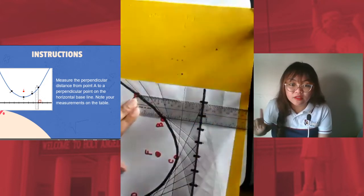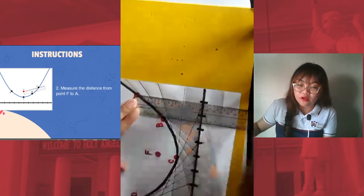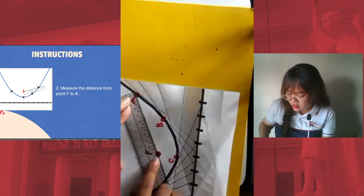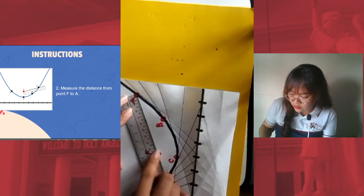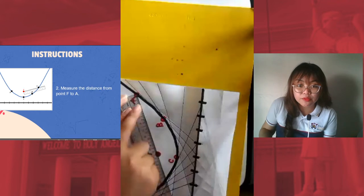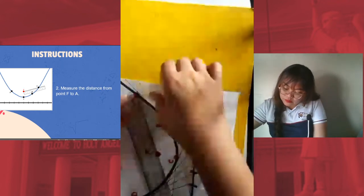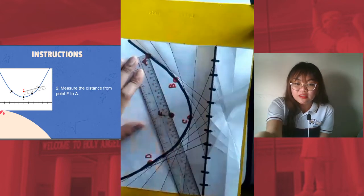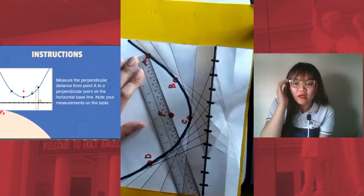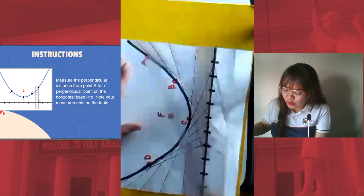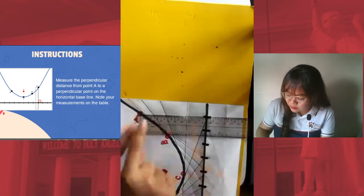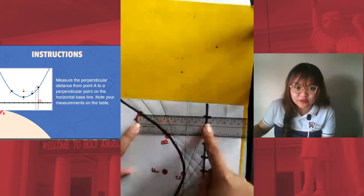Again, let's go back. The first is to measure point F to point A. So this is the distance point F to A, this one, point F to A. Oh, let's put that higher, F to A. And then next is to measure the distance from A to the perpendicular point. So that's A to the line, A to the base line.